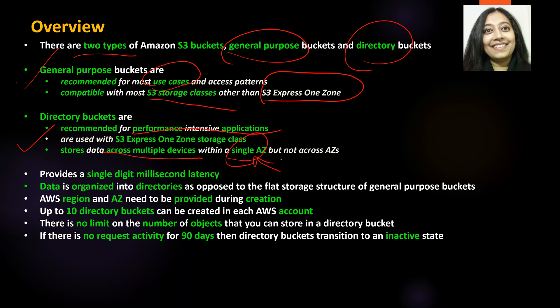Since it uses S3 Express One Zone, it provides single-digit millisecond latency. Data is organized in directories as opposed to the flat storage structure in general purpose buckets — that's one of the key differences. When creating a directory bucket, you'll be asked to select an AWS region and an AWS availability zone.